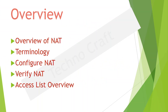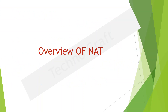We will simplify our configuration with something called an object group. We will also introduce you to the modular policy framework. Because we are talking about access control, the modular policy framework gives us much more granular capability in controlling access. We can do all kinds of things with traffic — we can inspect it, we can send it to an IPS module or a Firepower service module using the modular policy framework. We can even look all the way up to layer 7, and we are going to see that in this section as well.